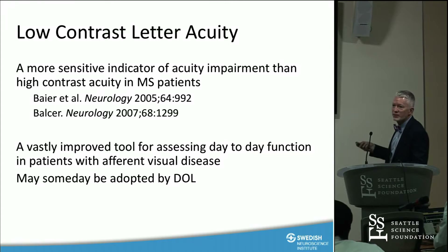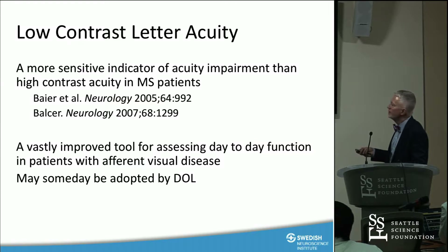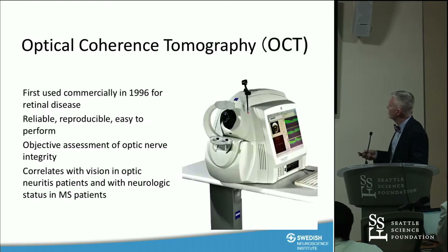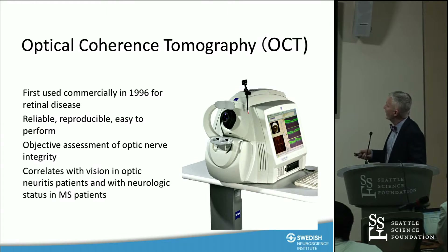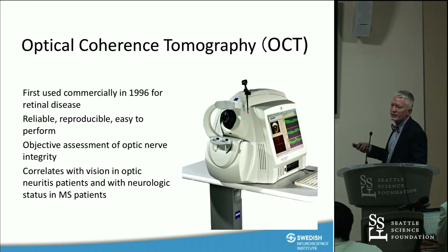Low-contrast testing is more sensitive than the 100% high-contrast used in optometrists' and most ophthalmologists' offices. It may be adopted by the Department of Licensing for vehicle screening because it's much better for assessing night vision driving. OCT is another tool we have. It was developed at MIT and partly at Harvard in the 1980s and 1990s, first used for corneal assessment and then retina, and has now been adopted for glaucoma and optic nerve diseases.